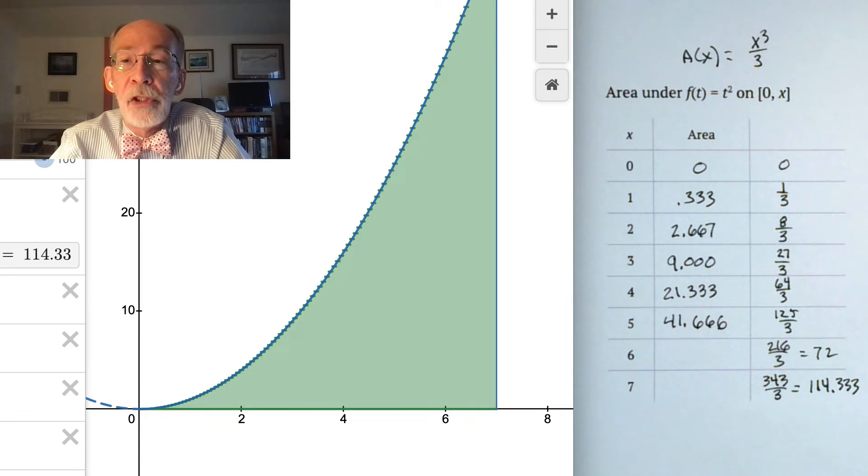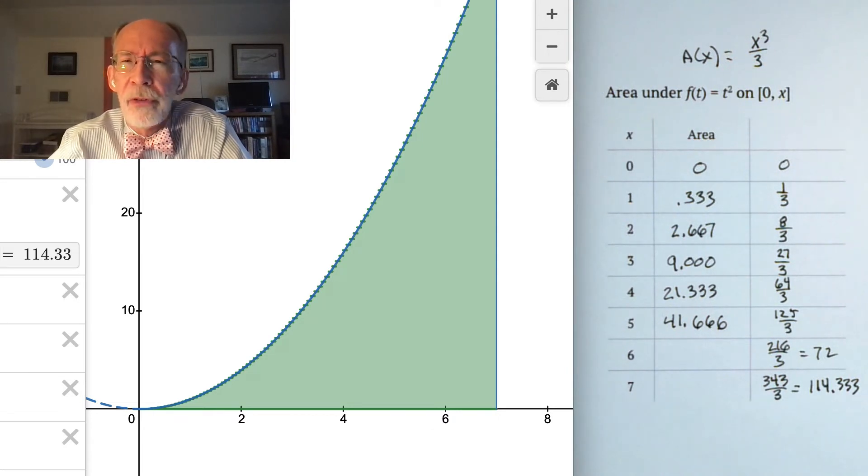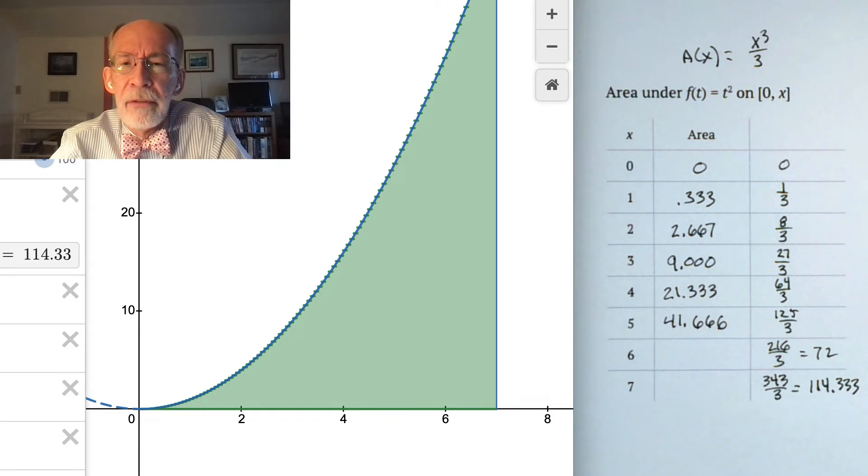And I look at that x cubed over 3, and I ask myself, what happens if I differentiate it? And the answer is, if I differentiate it, I get the squaring function that we started out with. And so I begin to ask myself, does reverse differentiating, so to speak, have anything to do with finding areas? Does it have anything to do with evaluating definite integrals?